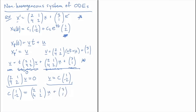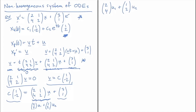Rearranging by moving all terms to one side, and rewriting the matrix-times-u as column vectors times components u1 and u2, we get: (2,4)·u1 + (1,2)·u2 + c·(-1, 2) = (-3, -1). This is two equations with three unknowns, so let's draw a picture to simplify.